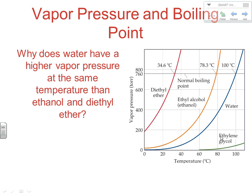Why does water have a lower vapor pressure at the same temperature than ethanol and diethyl ether? You have to escape — you have to overcome attractive forces. The stronger your attractive forces, the harder it's going to be to escape. Water, which has hydrogen bonding, is more strongly held together. Ethyl alcohol also has some hydrogen bonding, but the shape of the molecule makes it not quite as effective, so it boils at a lower temperature. Diethyl ether, a very symmetrical molecule, has a significantly lower boiling point. Differences in vapor pressure are all about differences in evaporation rate at given temperatures — it's all about intermolecular forces.